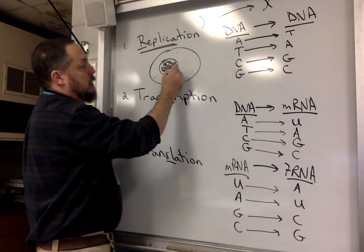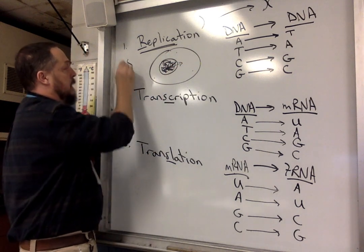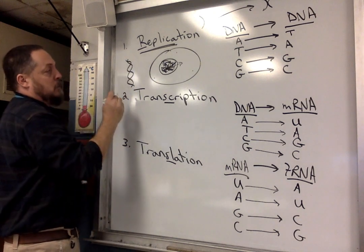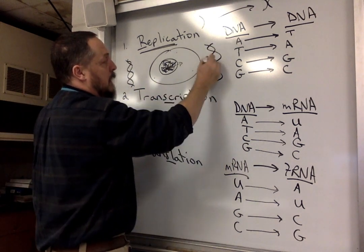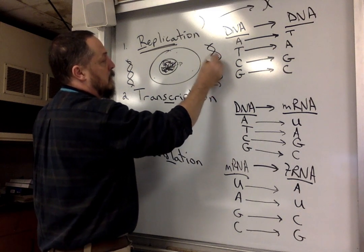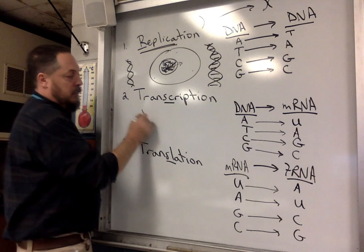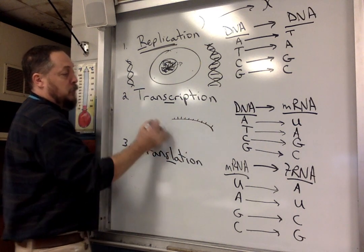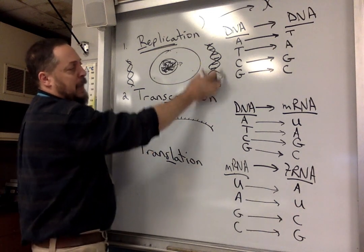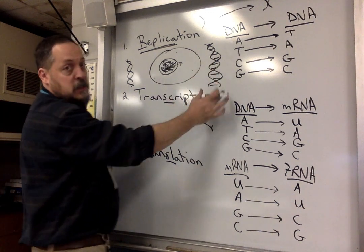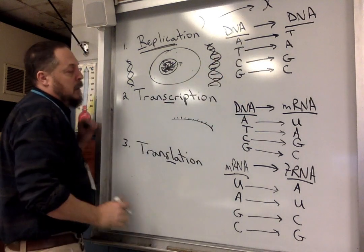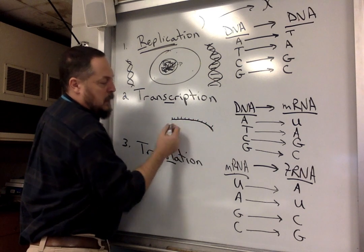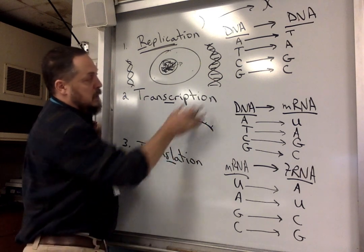DNA looks like a double helix — a twisted ladder. But mRNA is a single strand and is also shorter. DNA, if this were actual thickness, would extend out to the parking lot — it's really long. mRNA is not very long; it could be a couple hundred nucleotides while DNA may be many thousands.